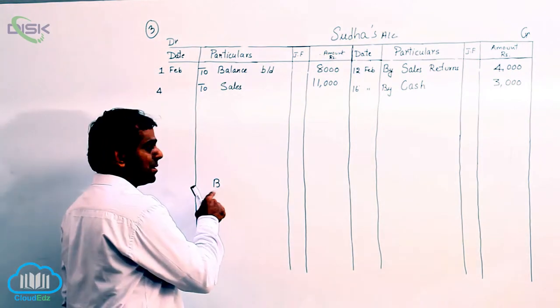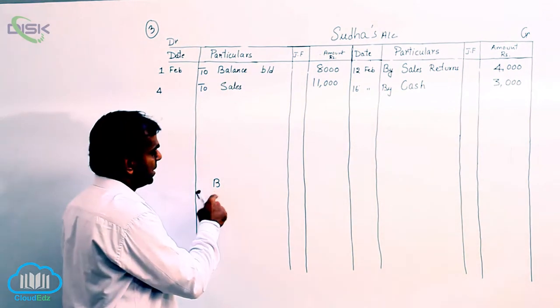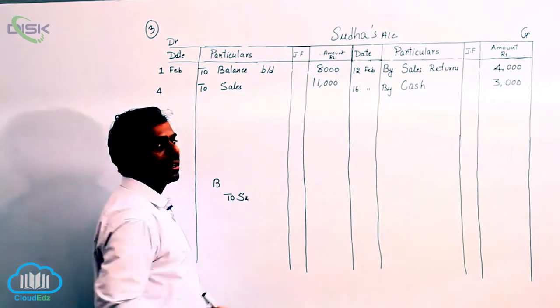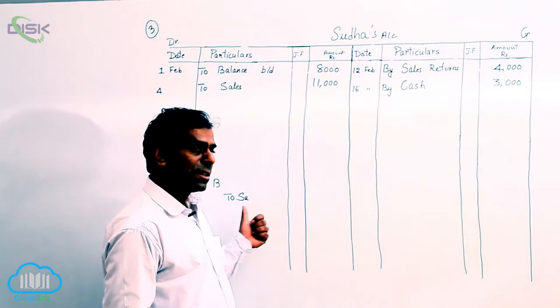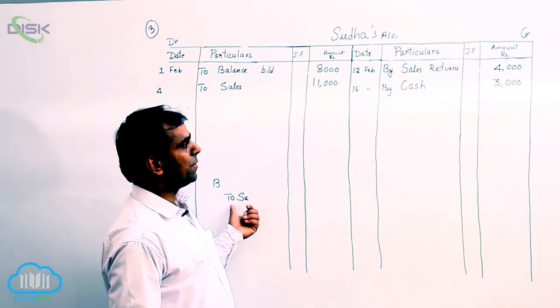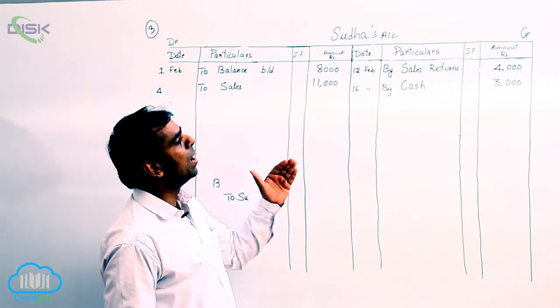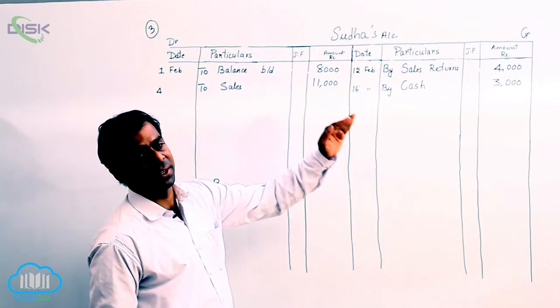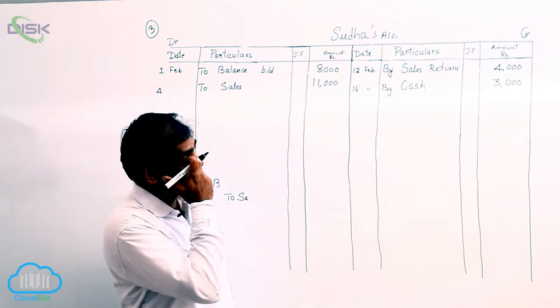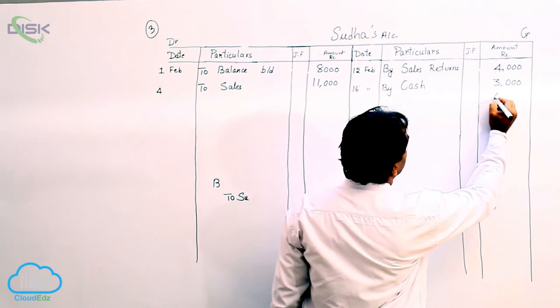So bank will be the receiver of the money from Sudha on our behalf. So bank is the receiver. So personal account debit the receiver. So the entry becomes bank account debit to Sudha's account. Bank account debit to Sudha's account because Sudha is the giver of the check. So credit the giver. So what we have to do now in the ledger of Sudha or account of Sudha, we have to put it on the credit side. The amount of 6000 which we got from Sudha in the form of check.